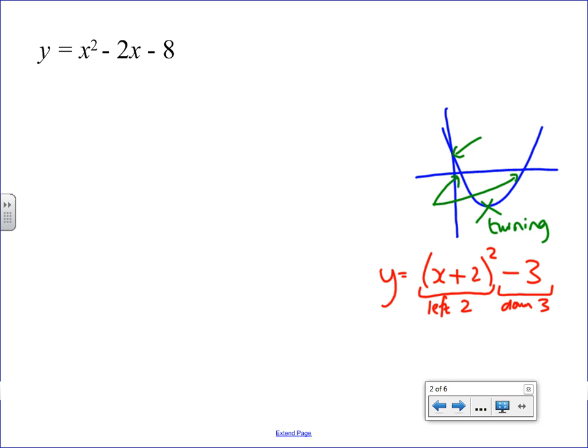So, this one's gone left 2. So, if it starts off its life here, which is y equals x squared, normal y equals x squared, and then we move it left 2, down 3, then it's going to end up somewhere like that. The completed square is what we need for the turning point.